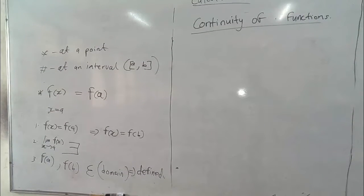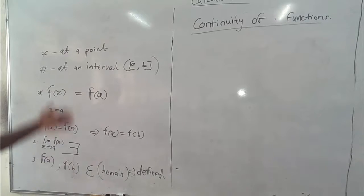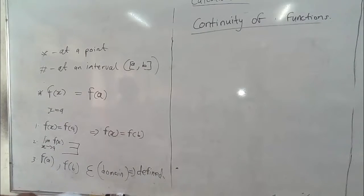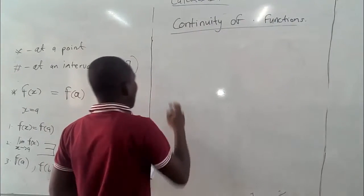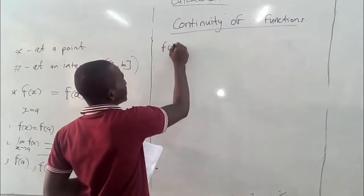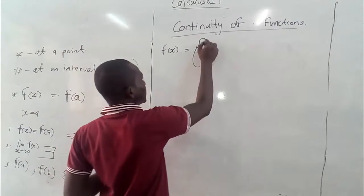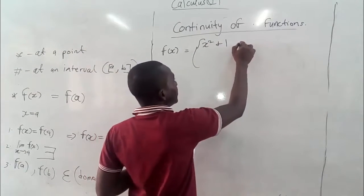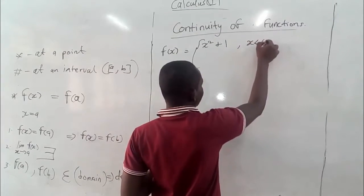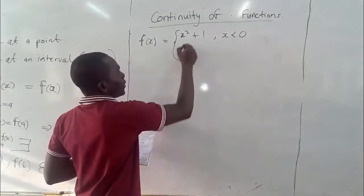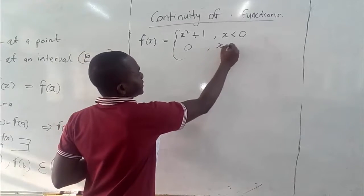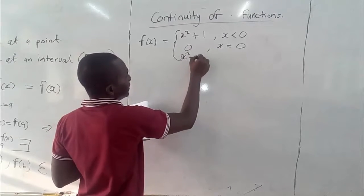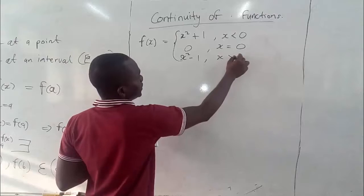Let's take one example to clarify the procedures. We'll take this piecewise defined function. Assuming f(x) is given by x² + 1 if x is less than zero, and zero if x is equal to zero, and x² − 1 when x is greater than zero.